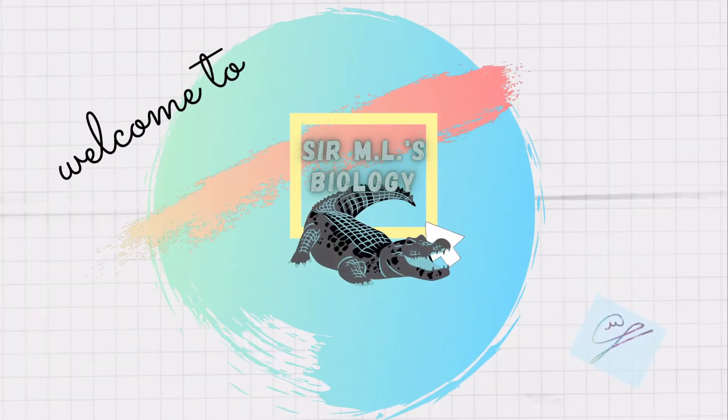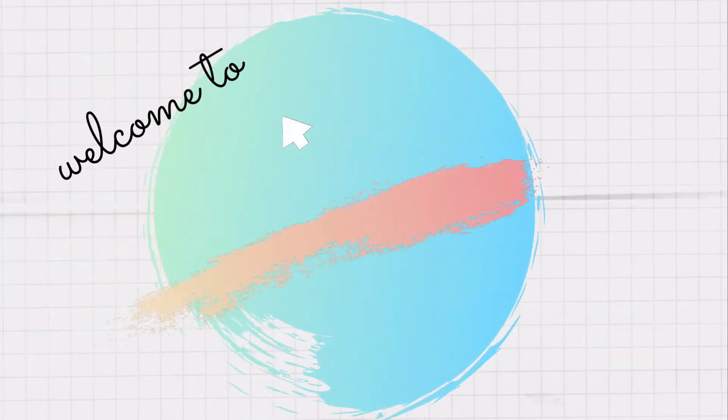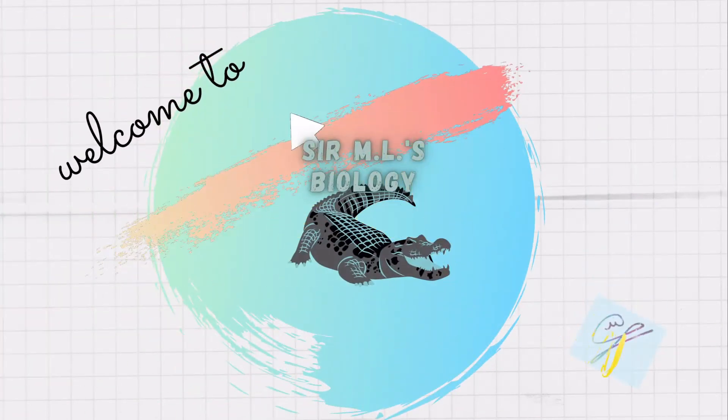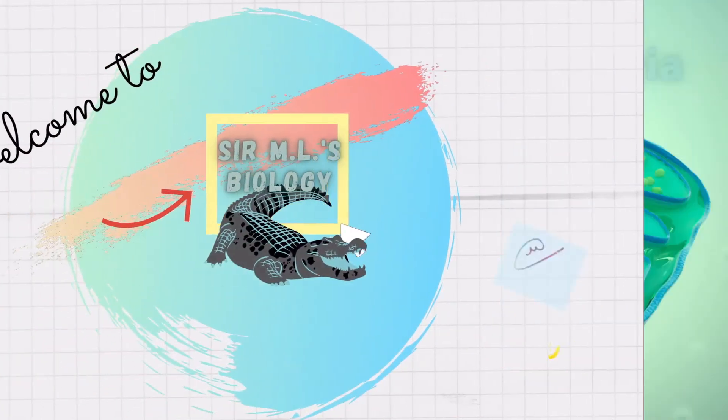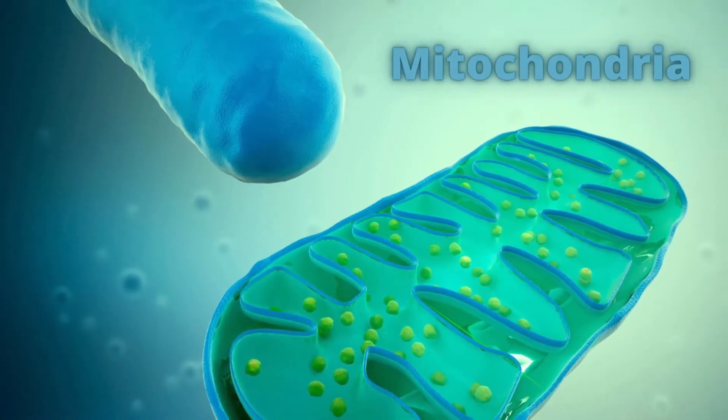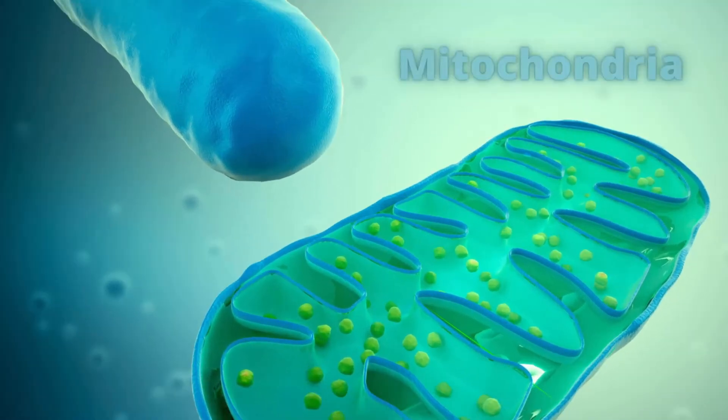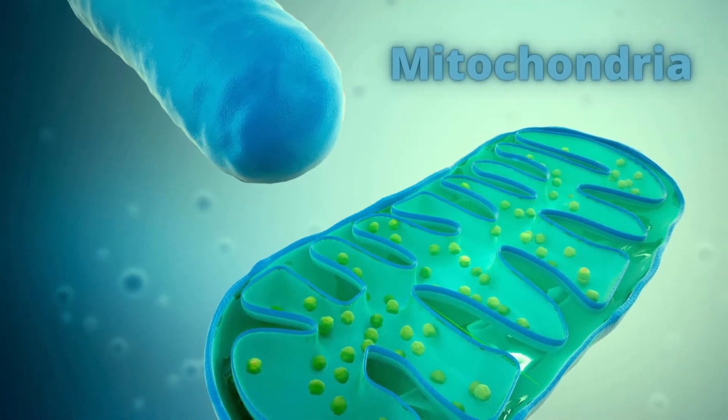Hey everyone, this is sir ml and please subscribe to my channel. In this video we're going to be looking a little bit into the ultrastructure of mitochondria. The mitochondria are cell organelles found in all eukaryotic cells and are the sites of cellular respiration.